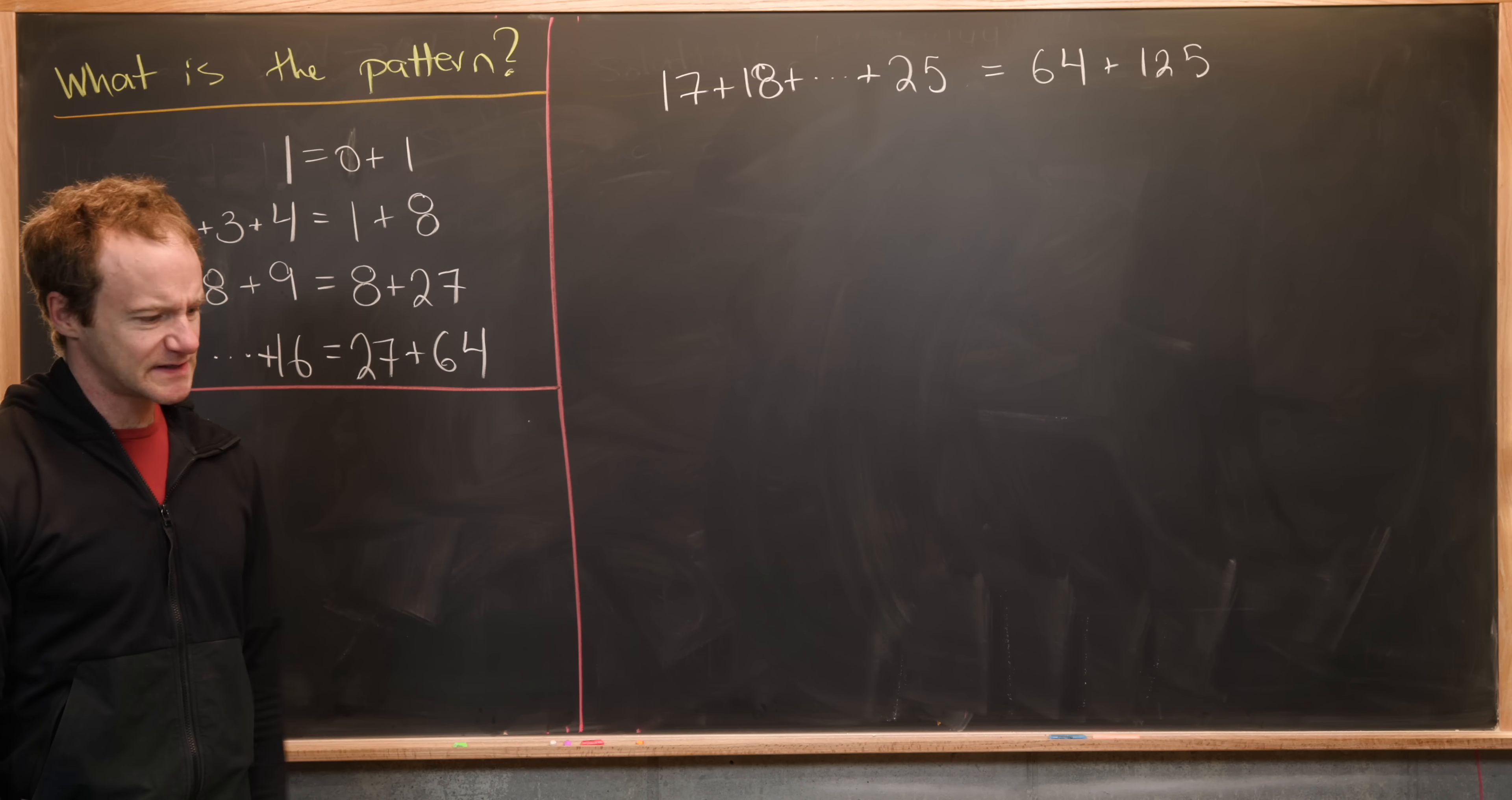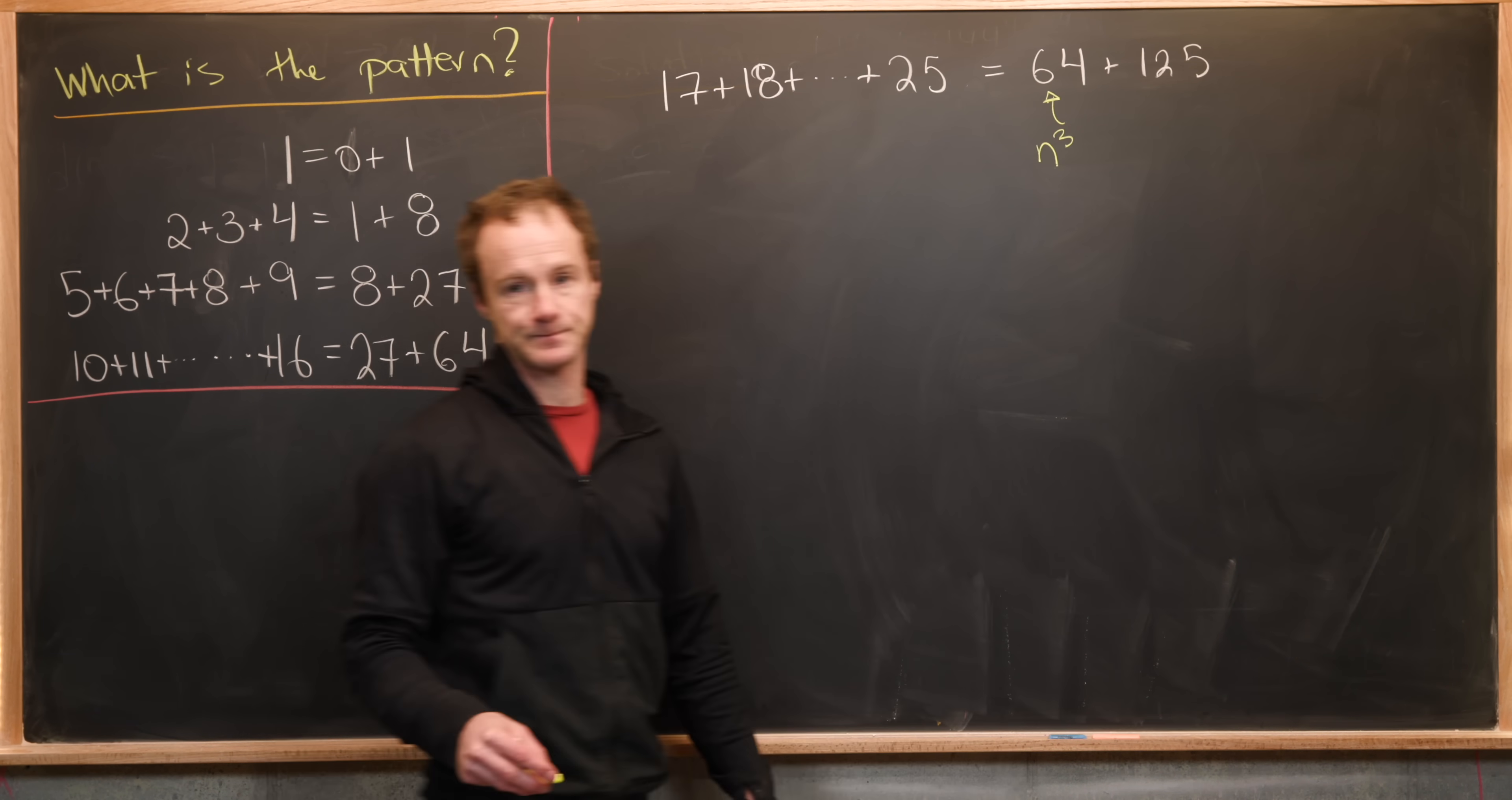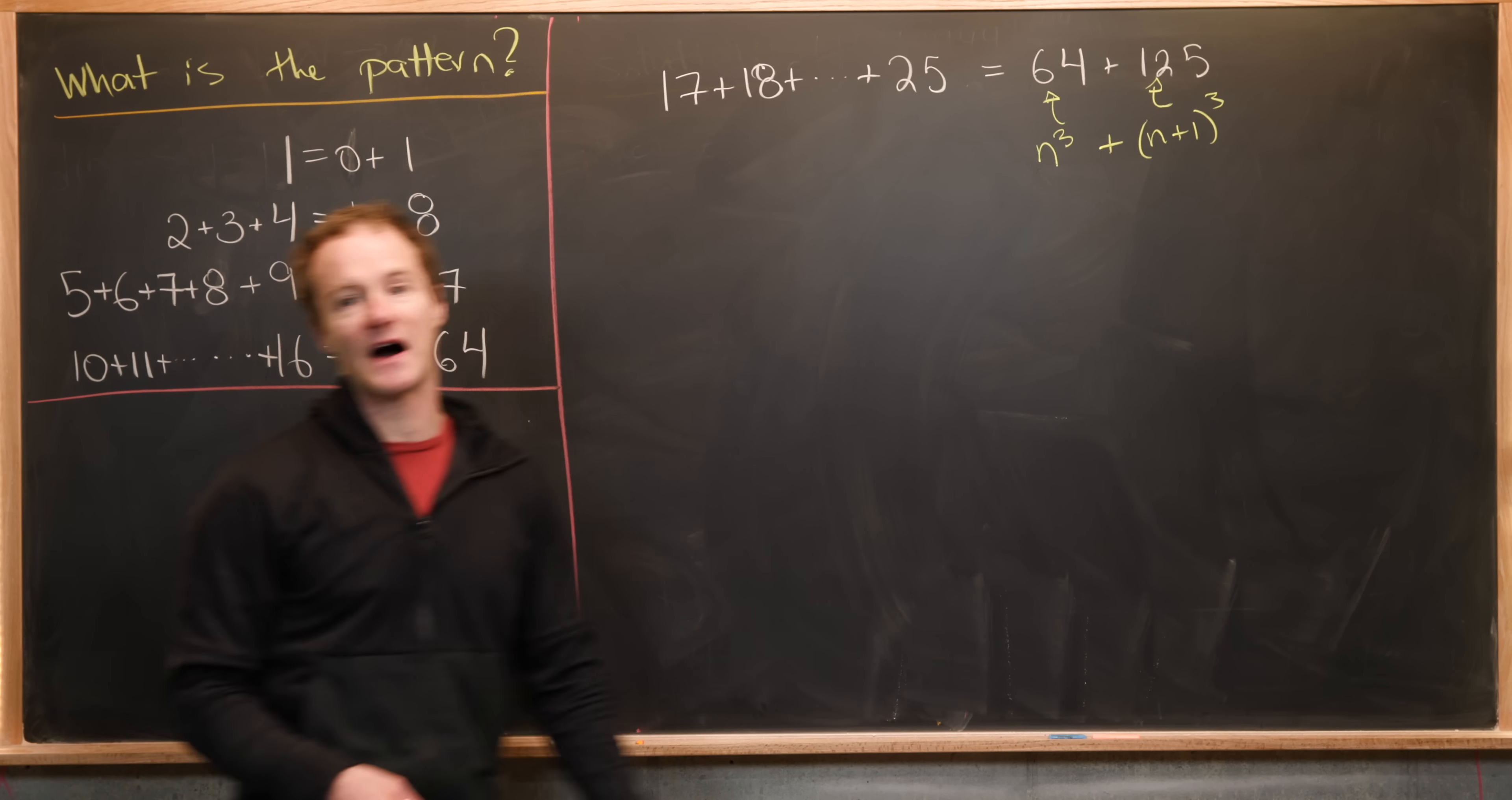So now let's maybe see if we can generalize this. And how could we do that? Well, maybe we could notice that this guy right here is a perfect cube. So maybe we could label this one as n cubed. But this is the next perfect cube. So this would be like n plus 1 cubed. So in this case, we have n equals 4, n plus 1 is 5.